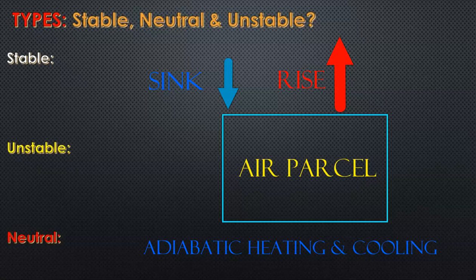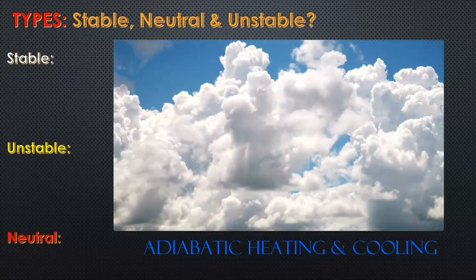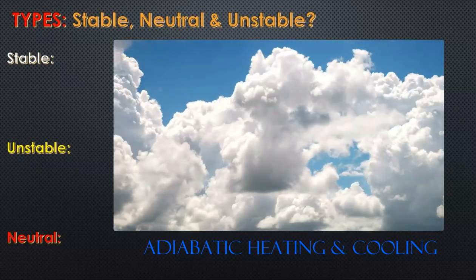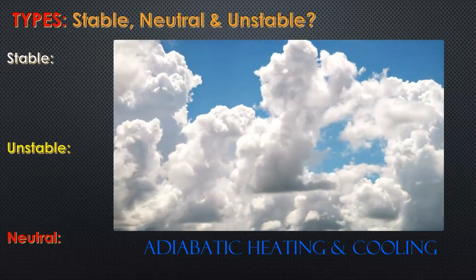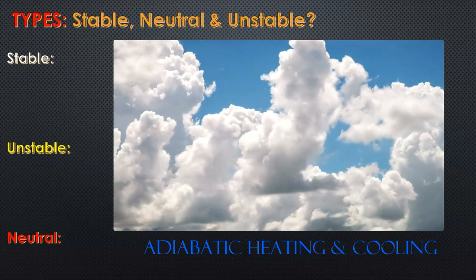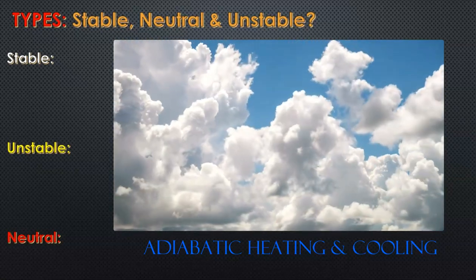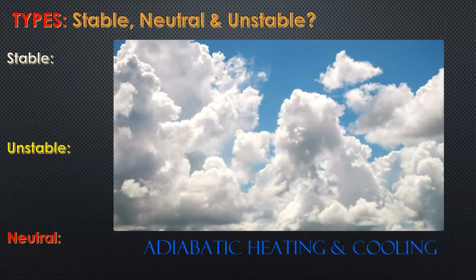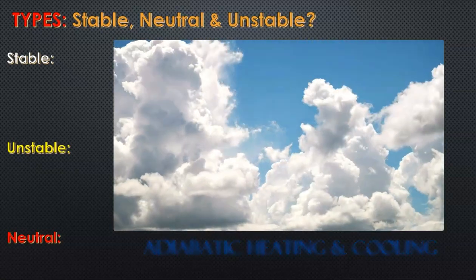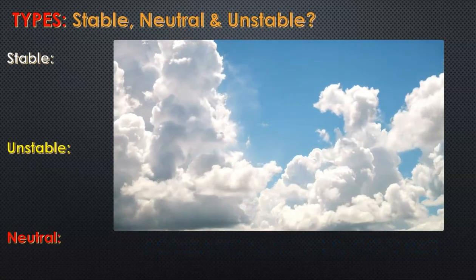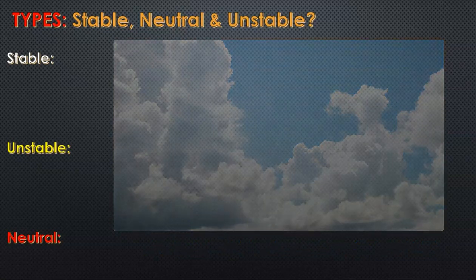We measure air temperature at certain altitudes, which are consistent in certain areas of the Earth. We discuss adiabatic heating and cooling, looking at the air parcel's temperature at certain altitudes and how this relates to the environmental lapse rate (ELR). There are three types of stability in the atmosphere: stable, unstable, and neutral.